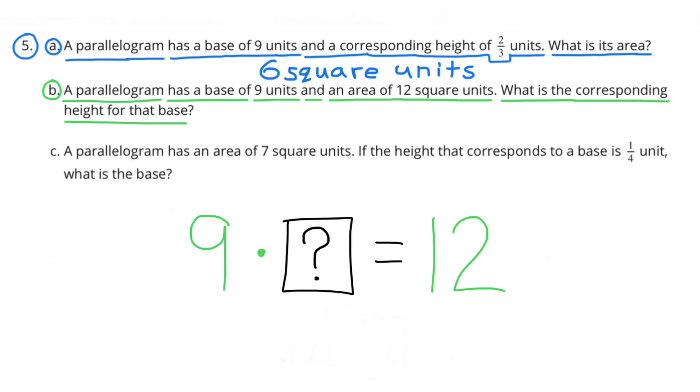We know that base times height equals area, but they haven't given us the height, so we have base times unknown equals the area, or nine times the unknown number equals twelve. To figure out what number we multiply times nine to get twelve is the same thing as how many times does nine fit into twelve, or how many times does nine go into twelve.